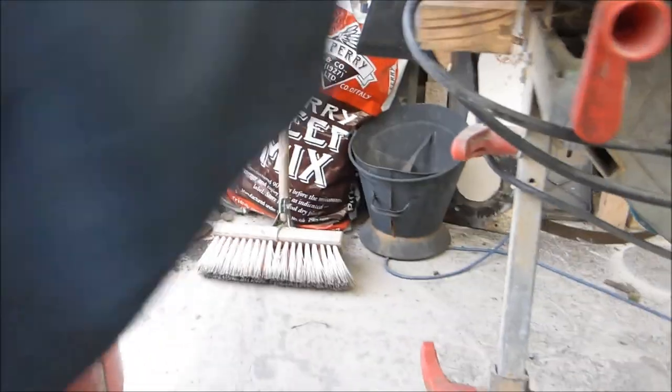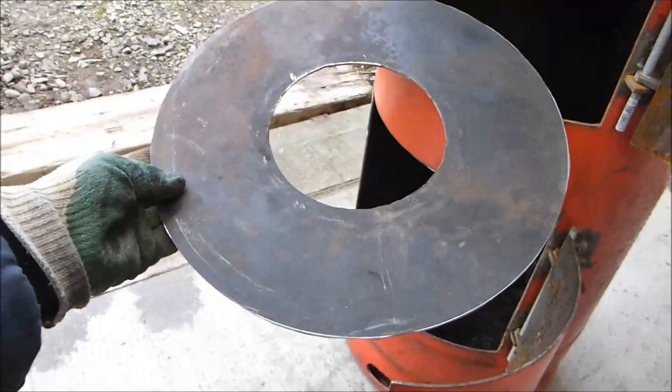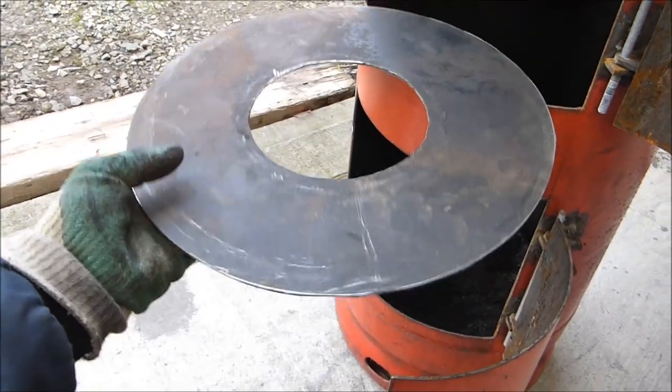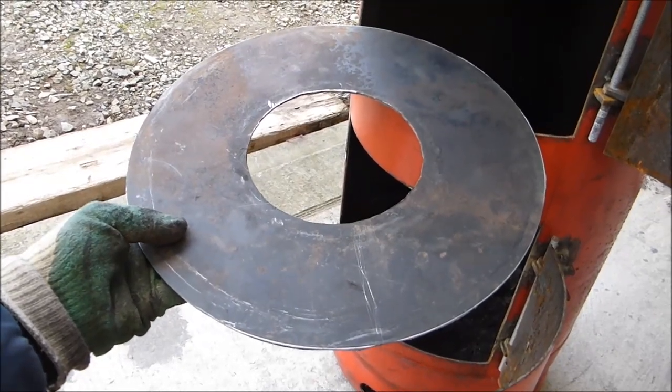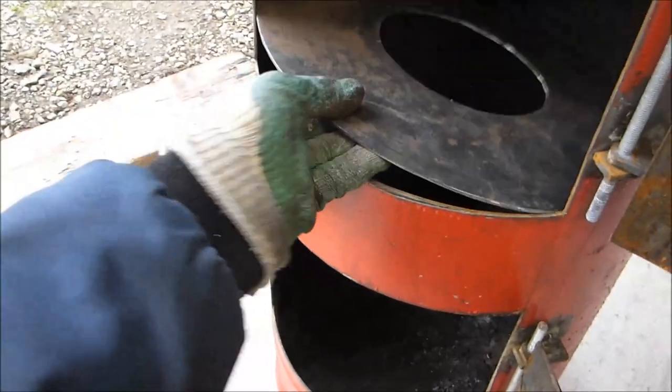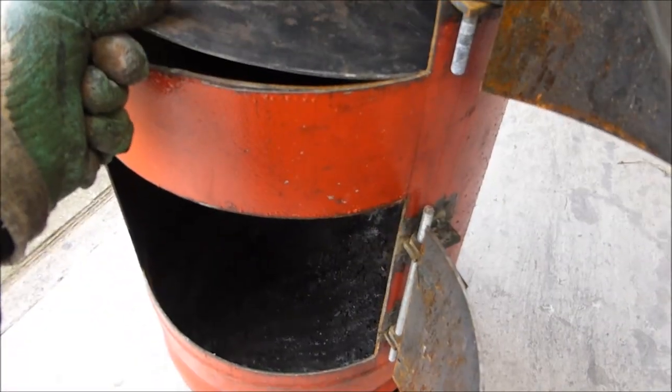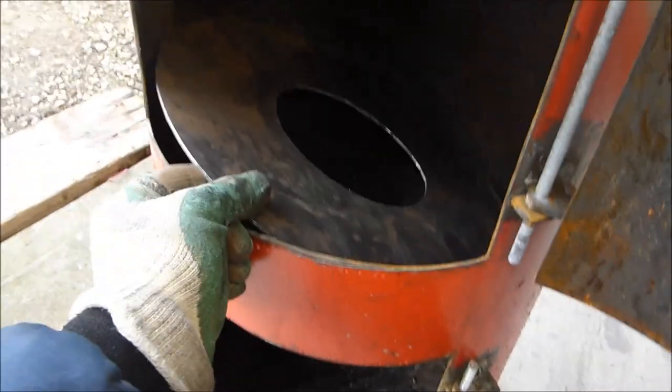The deal is, this big washer, it's got a 6 inch hole in the centre, and it's cut so that it's the same diameter as the inside of the cylinder of the propane tank, and it's going to sit down in the middle between the two doors.